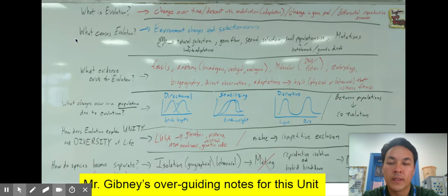So if evolution is happening, if this change is happening, what changes occur in a population due to it? We took a little bit of time talking about how evolution happens in a population not on an individual level.